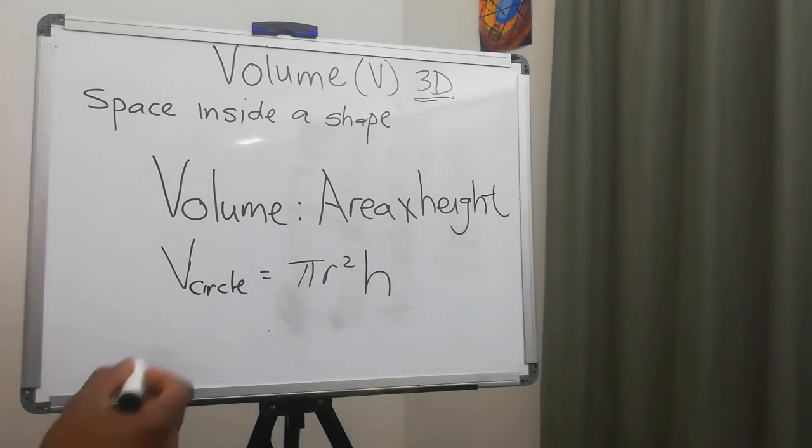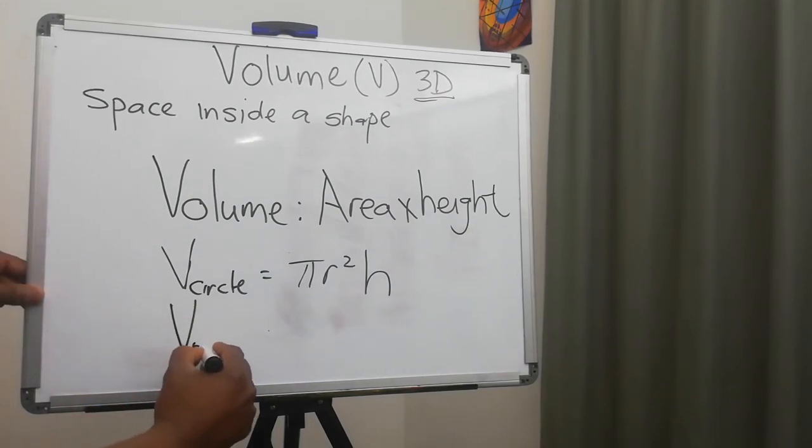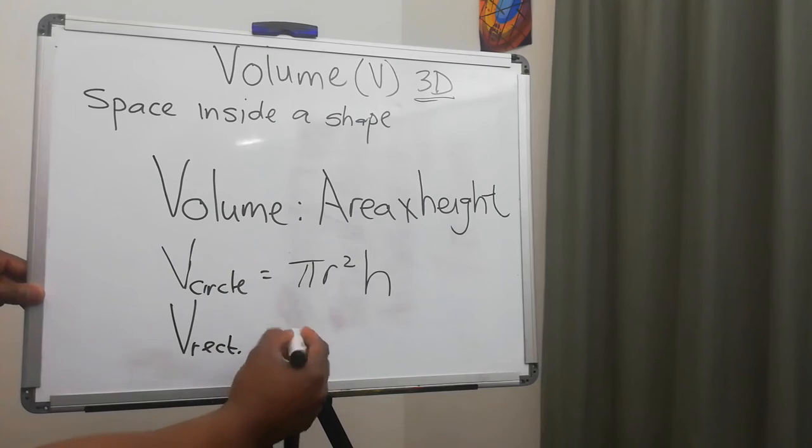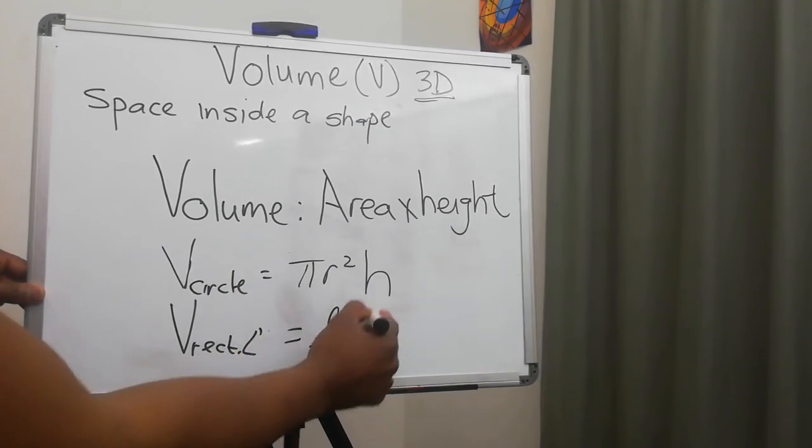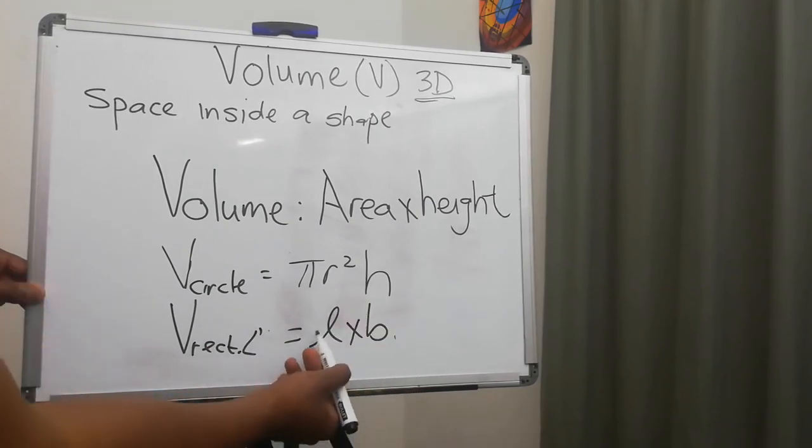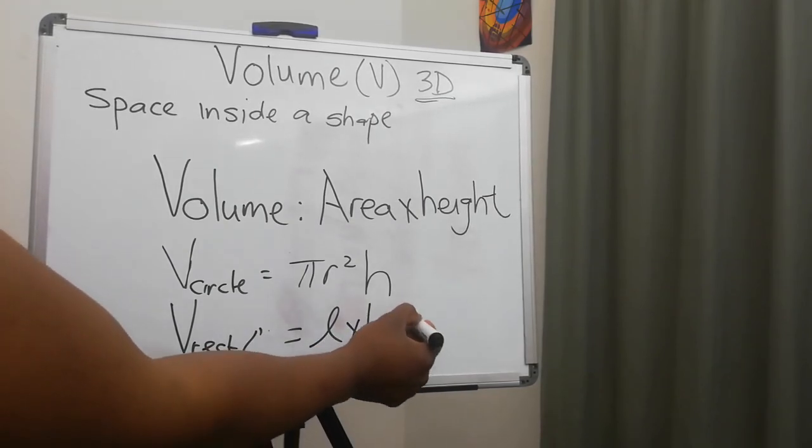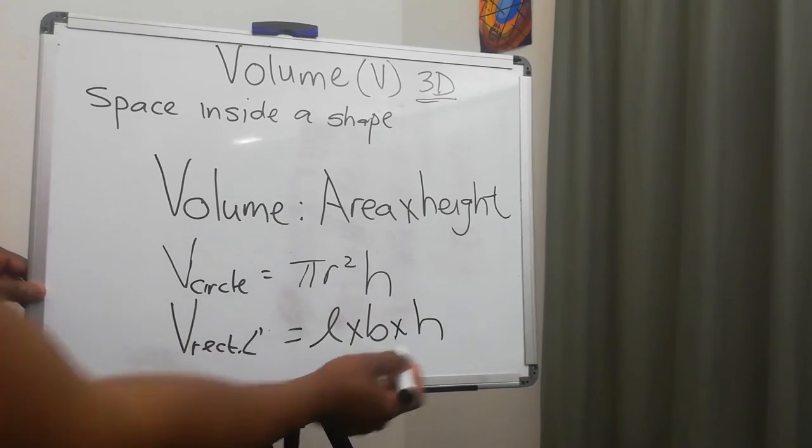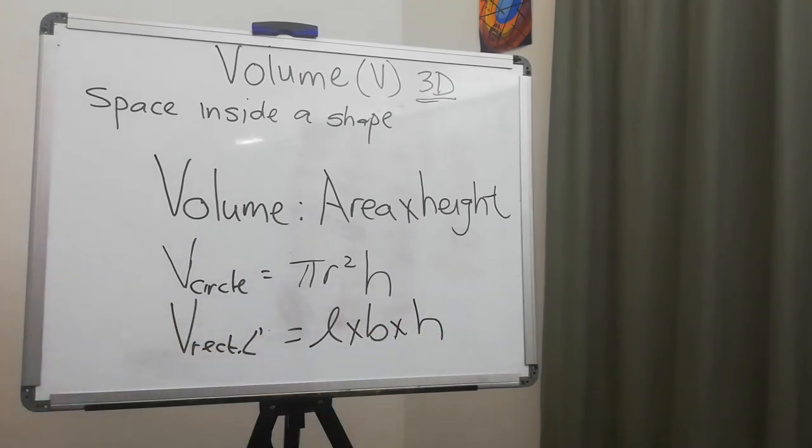So if we have the volume of a rectangle, then we say it is going to be length times breadth—this is the area of a rectangle—and we put another dimension in there to give us the height. And that is how we calculate volume.